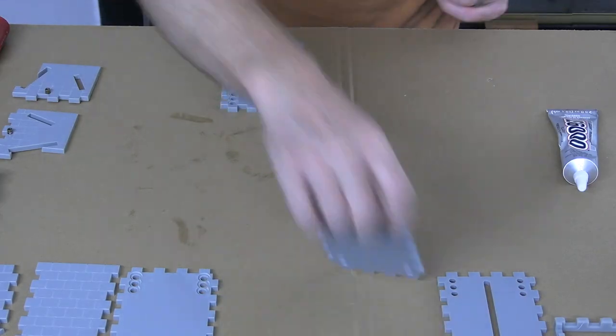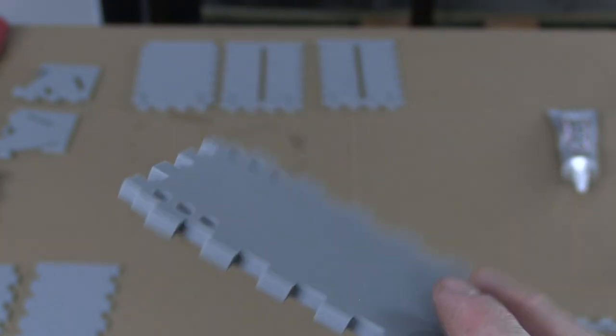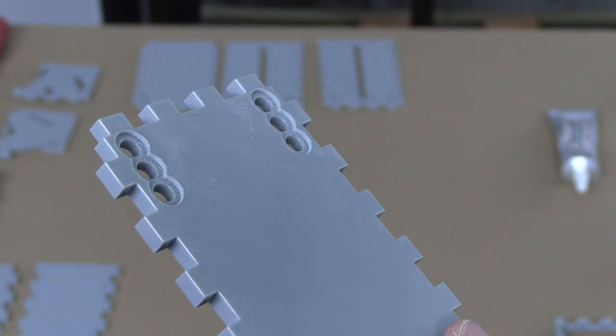With all those pieces done, it's time to move on to building the outer case. We have four pieces, all of which have an outside which is smooth, and an inside which includes these six recessed holes.